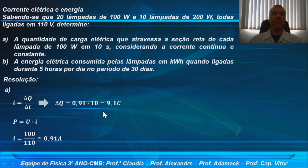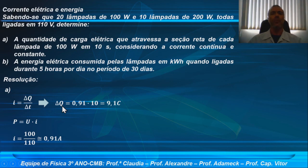Se você quiser, pode inclusive encontrar a quantidade de elétrons, porque, se tratando de um condutor metálico, os portadores de carga elétrica que se movimentam são exatamente os elétrons. Basta usar a relação: a carga vai ser igual ao número inteiro vezes a carga elementar, que é de 1,6 vezes 10 elevado a menos 19 coulombs. Mas eu vou parar aqui pela quantidade de carga, porque foi exatamente isso que foi solicitado no item A.